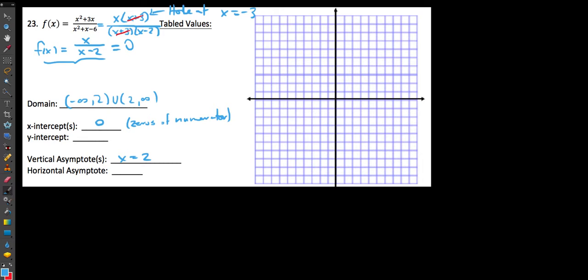And in terms of y intercept, how do we find a y intercept? Well, remember to find a y intercept, all we're really doing is tabling a 0 for x. So plug in 0 for x and find out what y equals. We would get 0 over 0 minus 2, which is 0 over negative 2, which is 0.